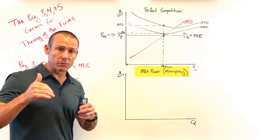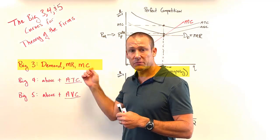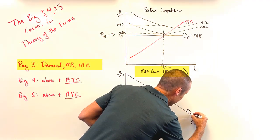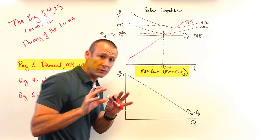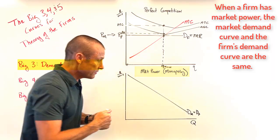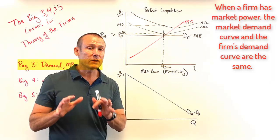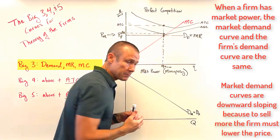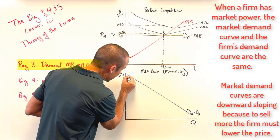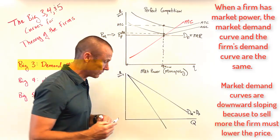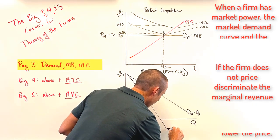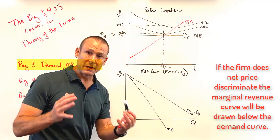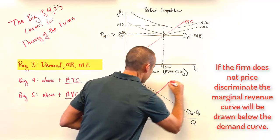Now let's do market power — monopoly or monopolistic competition. Big three: Demand, MR, MC. This time I draw the demand curve first. There are no side-by-side graphs; the market demand is the firm's demand. Assuming no price discrimination, a downward-sloping demand curve means MR will have twice the slope in absolute value terms. So demand gives me MR — I've got two of my big three.